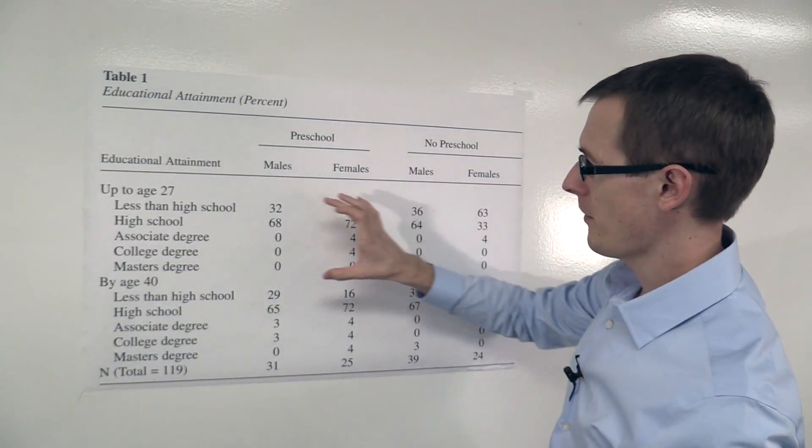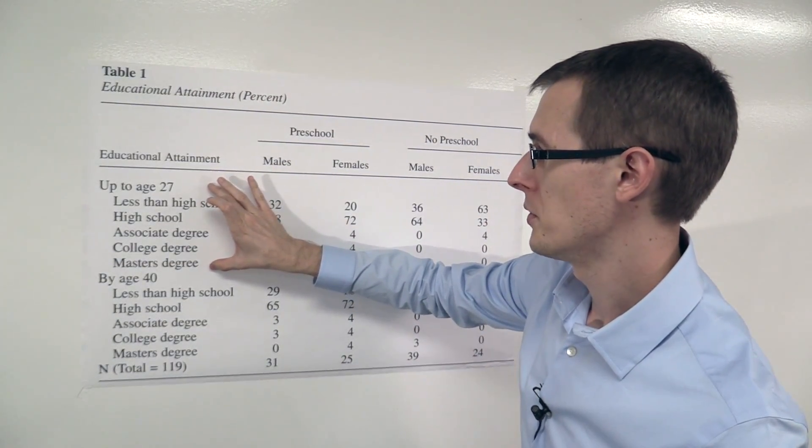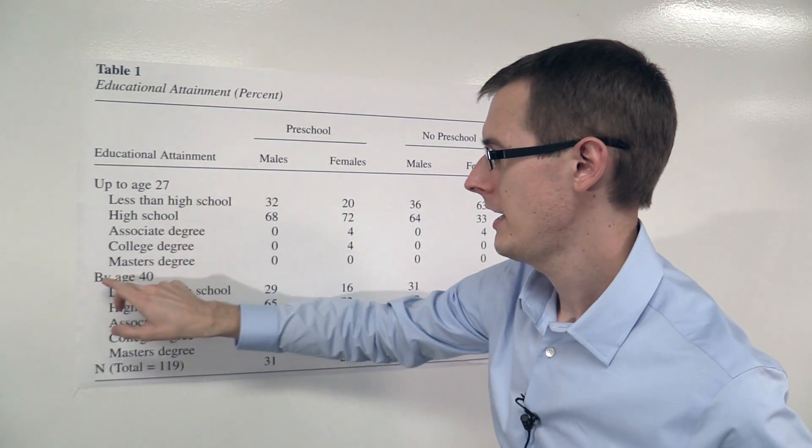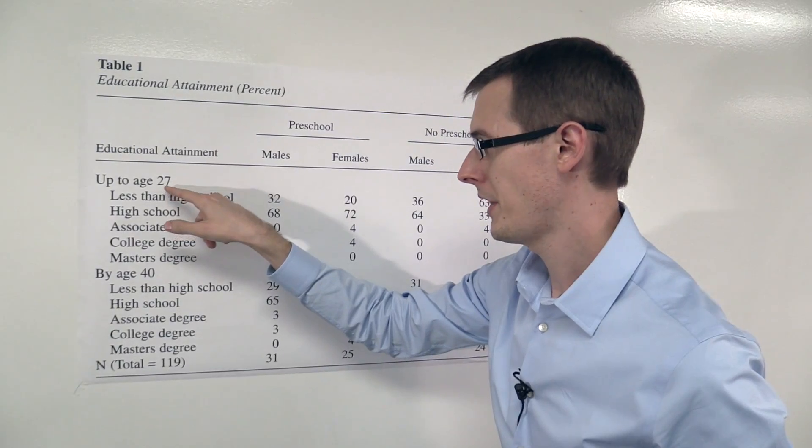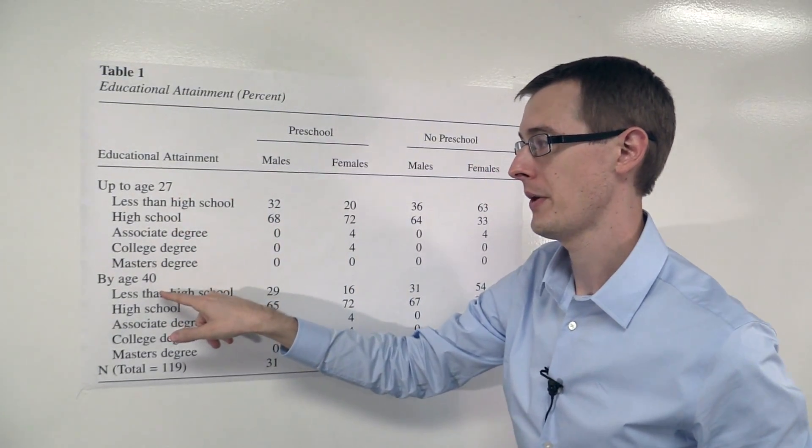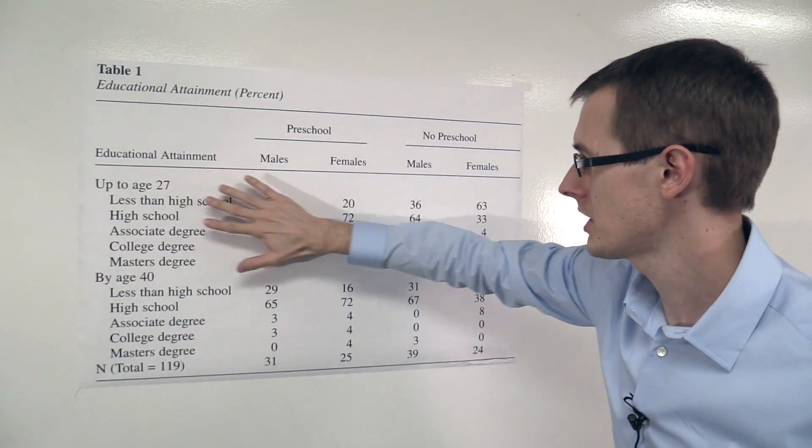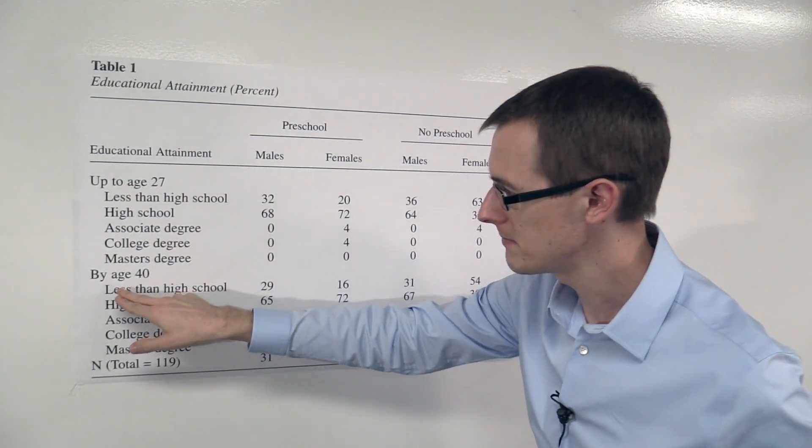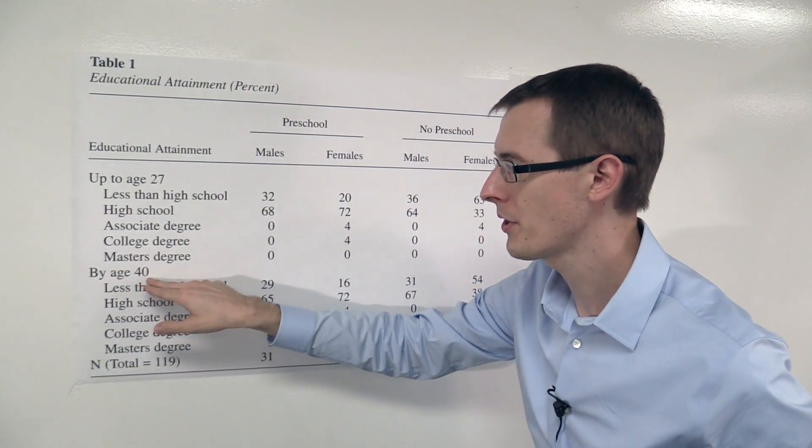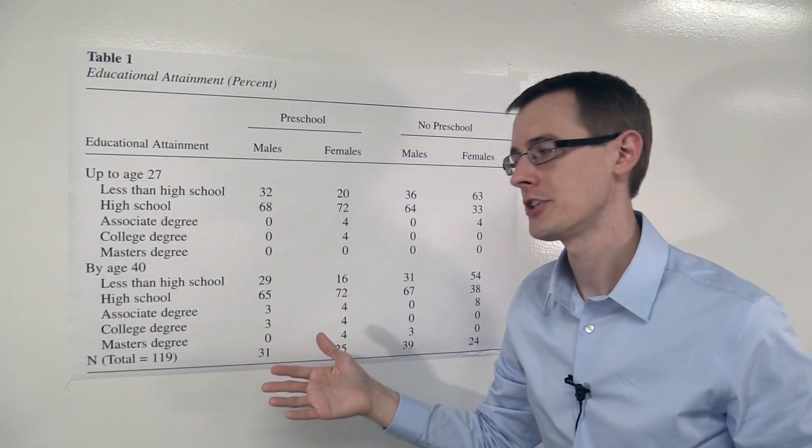So they've got two different sets of rows here, up to age 27 and then by age 40. So this is because two different surveys were done, one when they're about age 27 and then another when they're age 40. So now let's just ignore this first one because that's older data. Let's look at, by age 40, how much education did these students have?